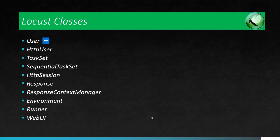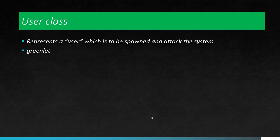Similarly, in Locust, we have multiple classes. User, HTTP user, task set, sequential task set, etc. are a few of the frequently used classes in Locust. We are going to see each and every class in detail as we progress, but today we are going to focus only on the user class.